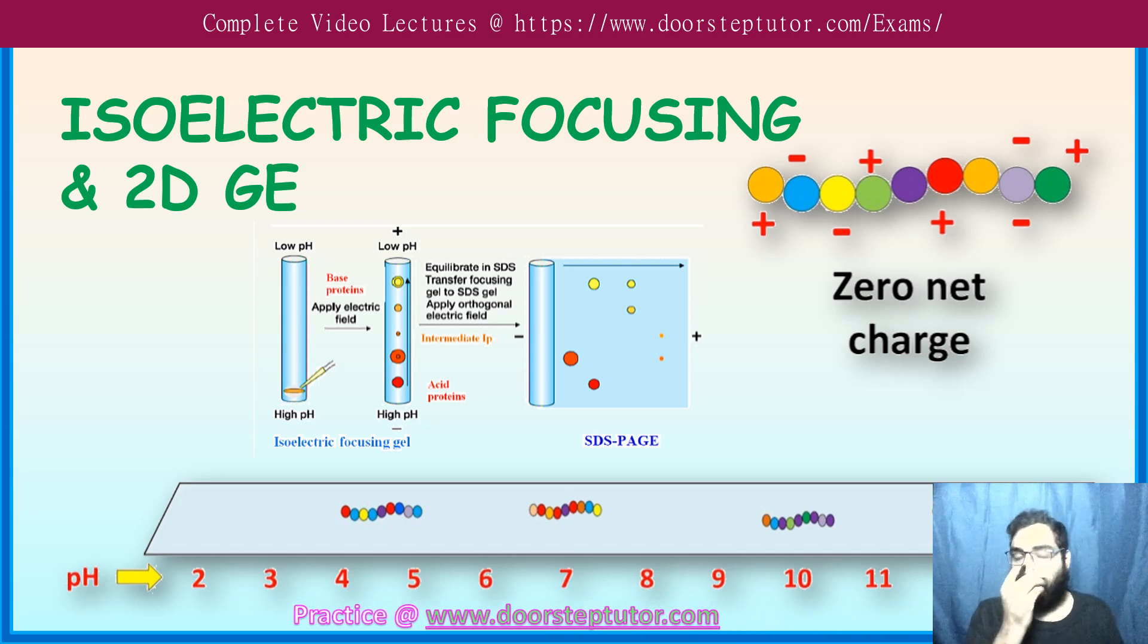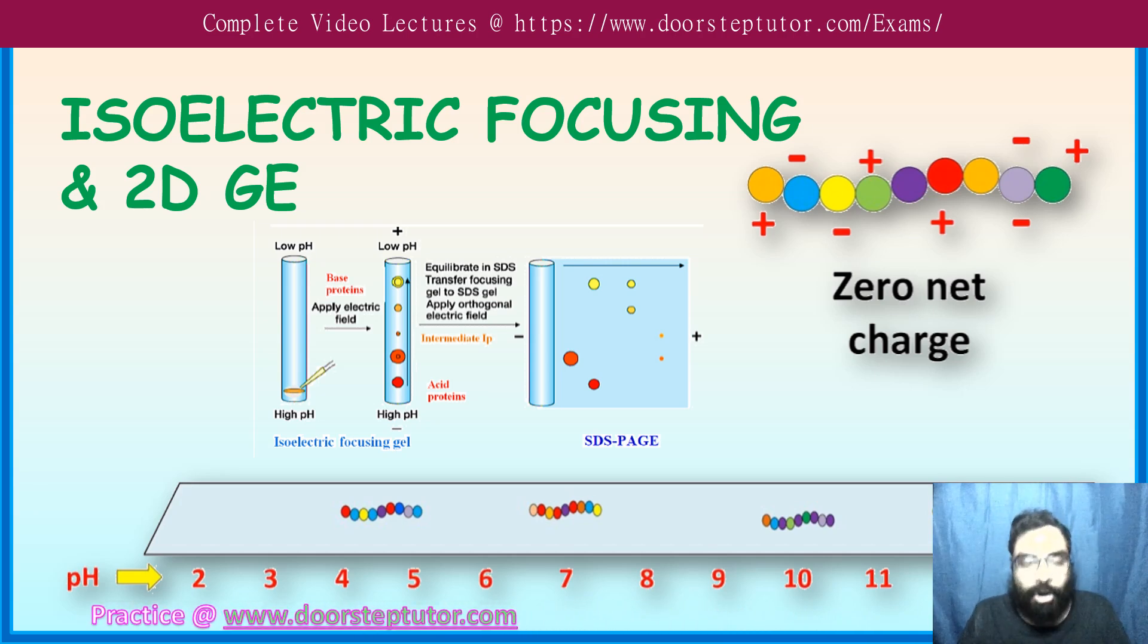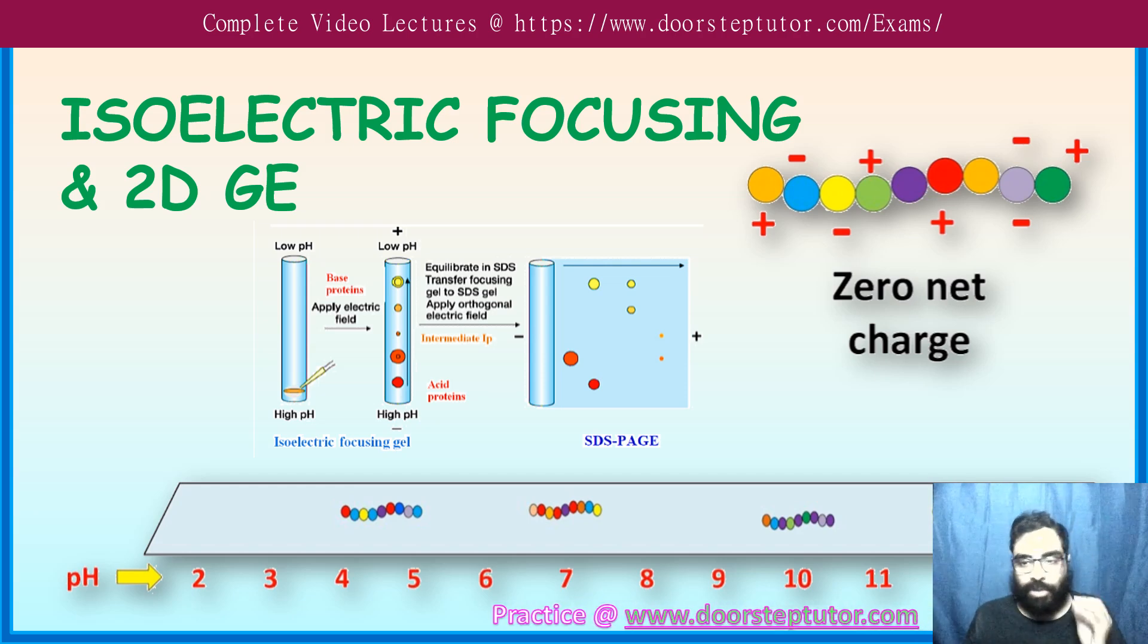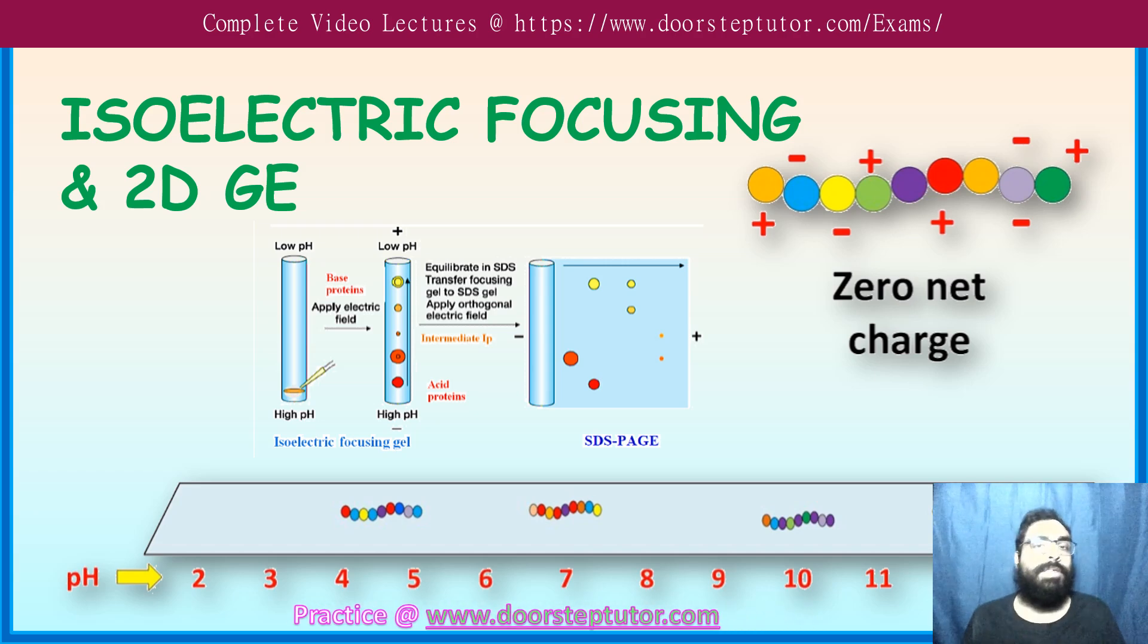These techniques are used to separate different types of proteins according to the condition required. So isoelectric focusing is one of the techniques which is very important. And then with the help of isoelectric focusing and SDS-PAGE we make a 2D gel, that is two-dimensional gel.